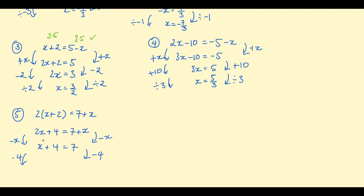Subtract 4 from both sides: x plus 4 take 4 is x, and 7 take 4 is 3. So x equals 3. Substituting back: 3 plus 2 is 5, and 2 times 5 is 10 on the left; 7 plus 3 is 10 on the right. That passes the check.